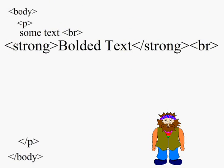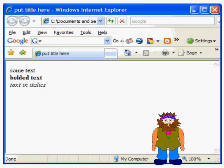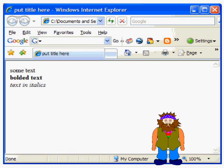So let's make another line of text and we'll do it in italics. This is done by placing text between an opening and closing tag with the letter I in them. And when we open it up in the browser, we can see that it looks like this, with the next line of text italicized.